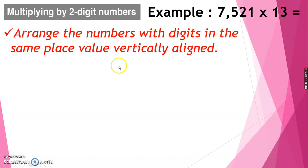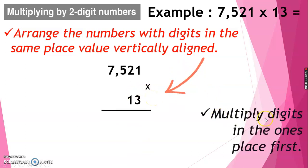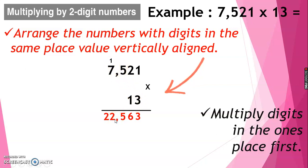Arrange the numbers with digits in the same place value vertically aligned, just like this. Next, multiply the digits in the ones place first — 1 and 3. 1 times 3 is equal to 3. 3 times 2 is equal to 6. 3 times 5 is equal to 15 — write 5 and carry 1 to the top of 7. 7 times 3 is equal to 21, plus 1 is equal to 22. Then for the tens digit, 1: 1 times 1 is equal to 1, 1 times 2 is equal to 2, 1 times 5 is equal to 5, and 1 times 7 is equal to 7.